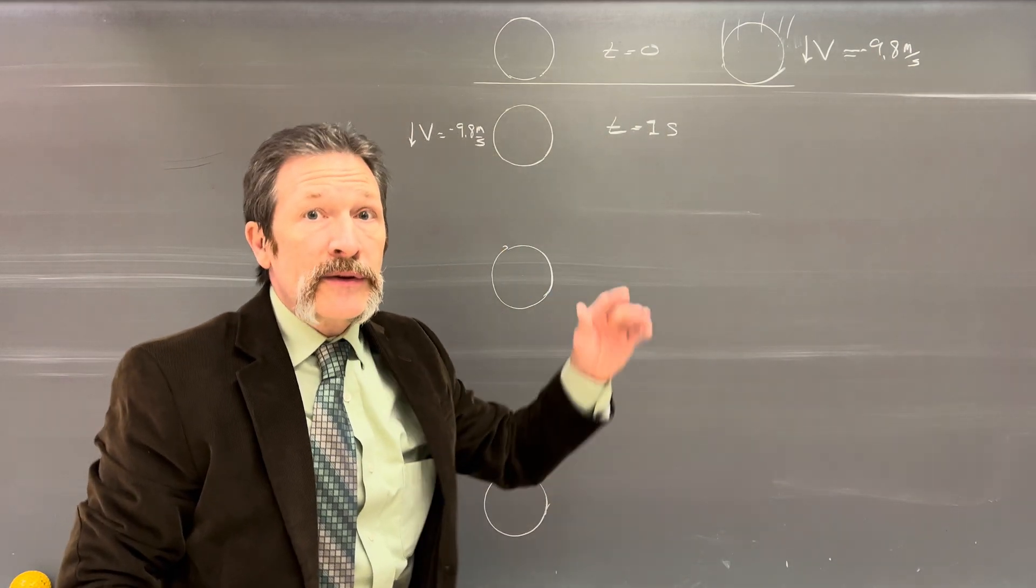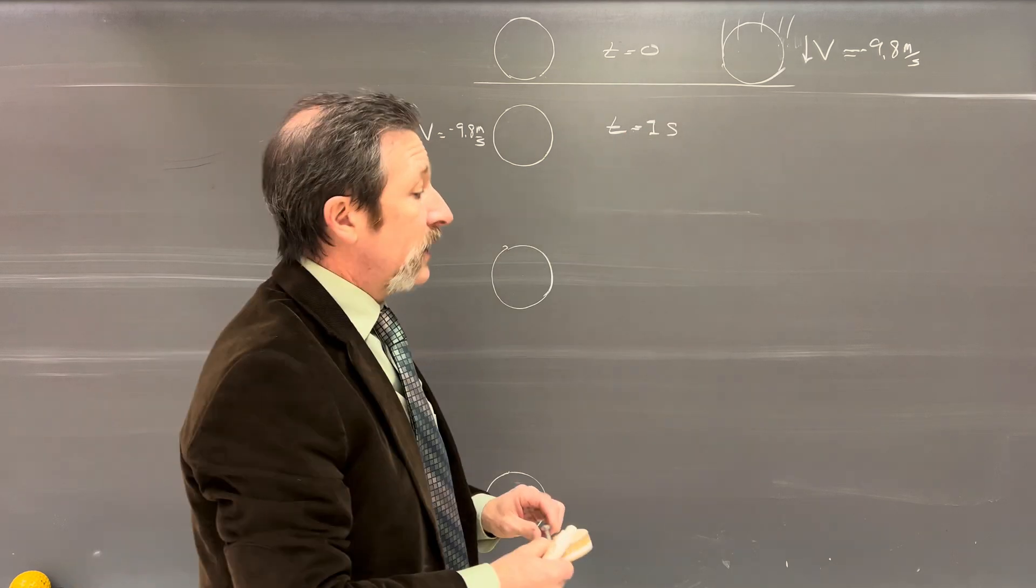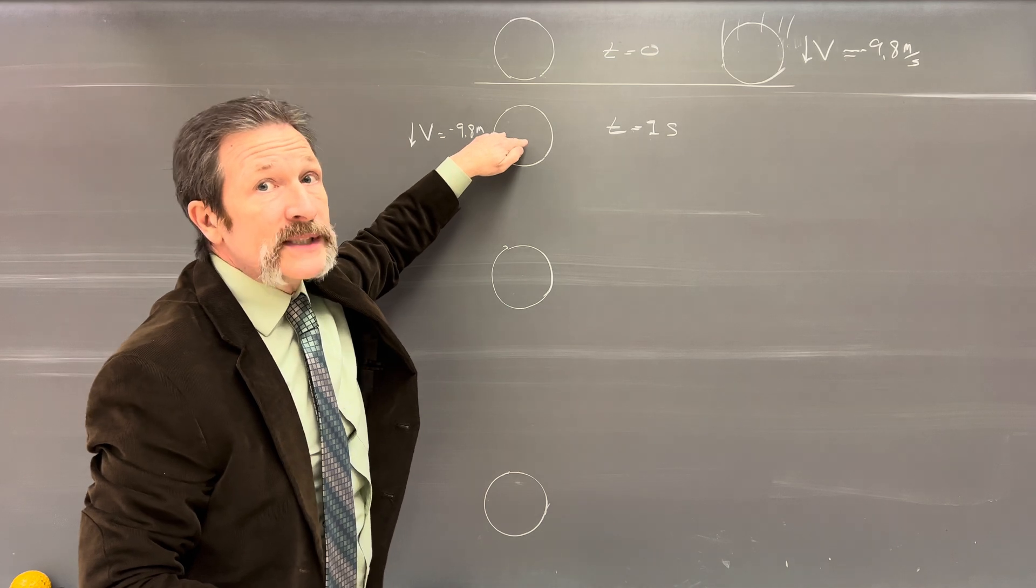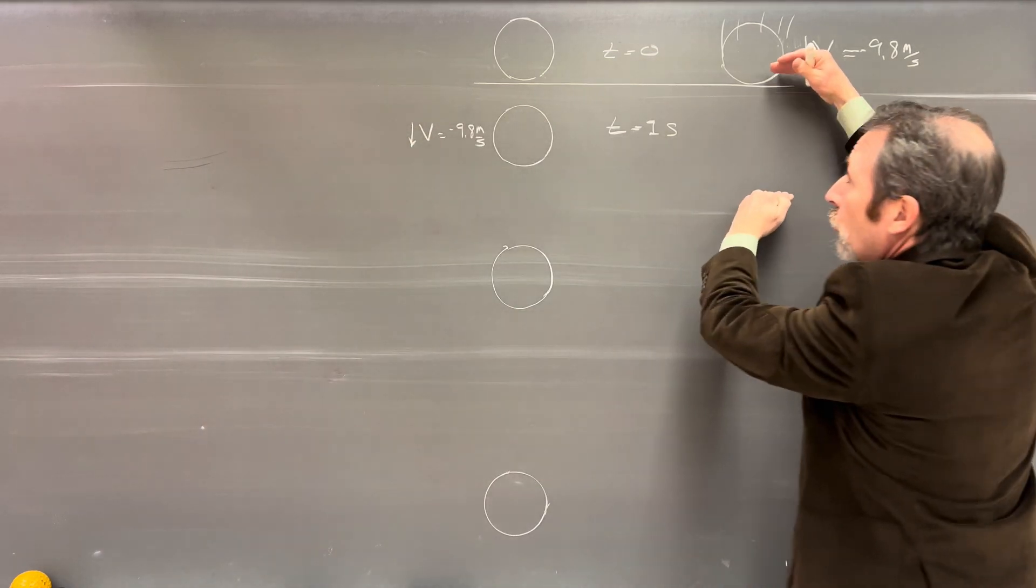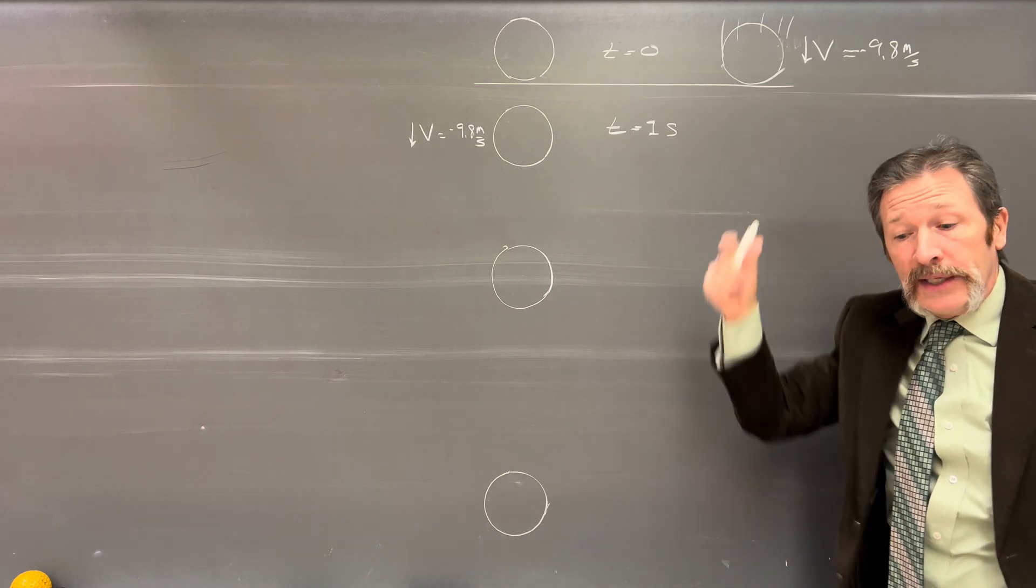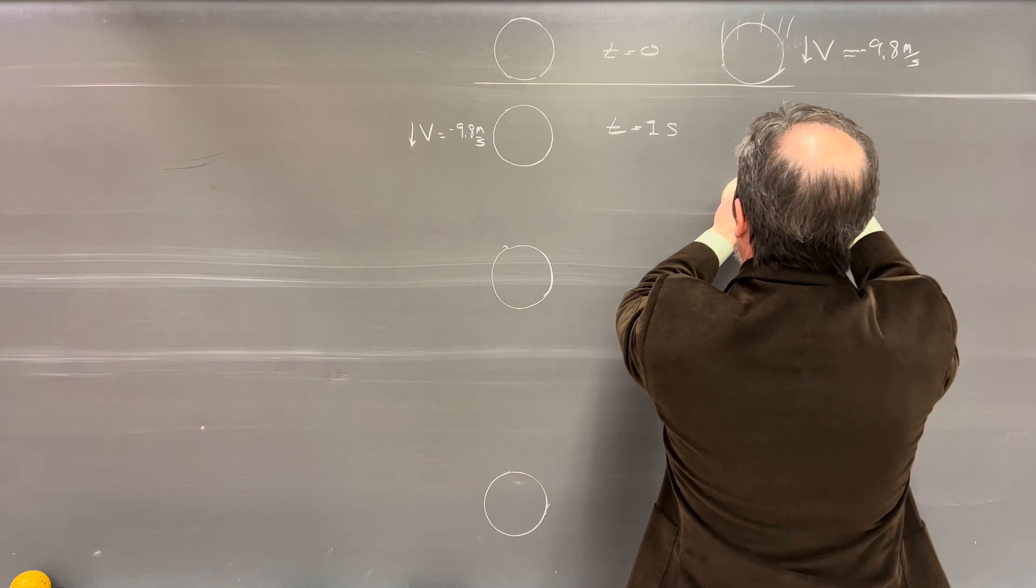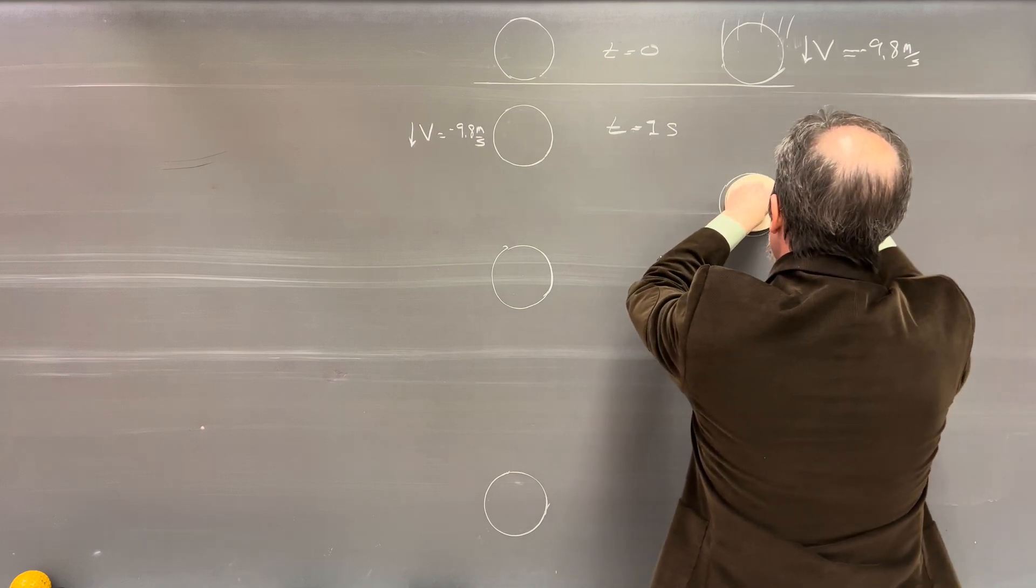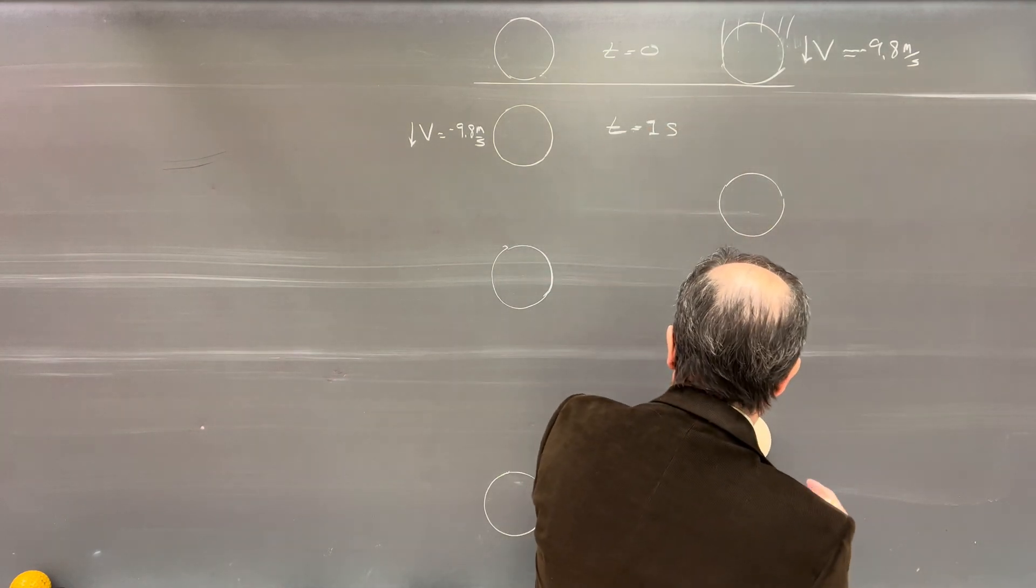That means in another second it's going to end up going twice that which is going to be 19.6. We also know that the distance that this one falls in the next second will be this distance. That'll equal the distance that this one is now falling. So I can draw that one out right here. So it's already got this much greater distance and then this one would end up falling about right here.